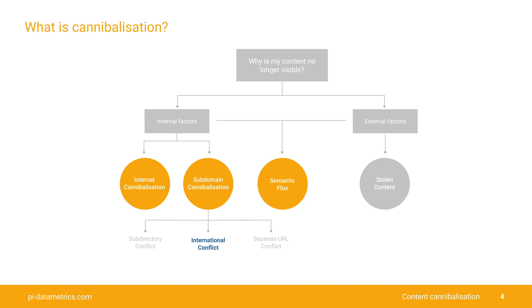External is really about stolen content — having duplicate content, for example, on an affiliate site. But today we're going to focus on those internal factors. There are four broad categories of cannibalization: internal conflict, subdomain conflict, international conflict, and finally the much misunderstood semantic flux. We'll save that for another time as well. But today we're going to focus primarily on internal conflict.